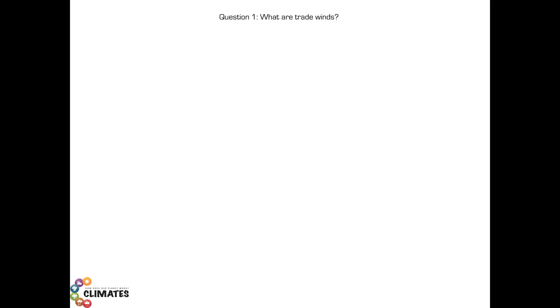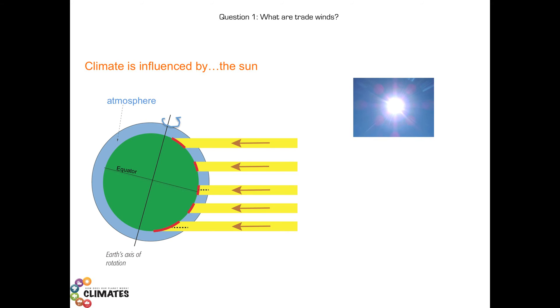Before talking about trade winds, we will try to understand what affects the climate. Obviously, the climate is influenced by the amount of solar energy received in a region on the Earth, how the Earth warms up. Look at this figure. The Earth is colored in green, the atmosphere in blue. The equator is here, there is the Earth's rotation axis.